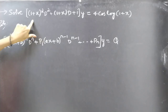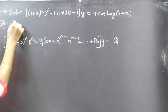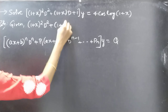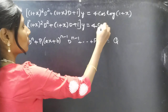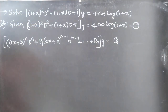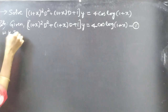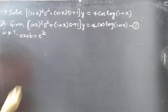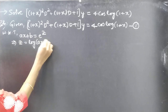We will reduce this Legendre's equation to a linear differential equation with constant coefficients by making a substitution. From the Legendre's equation procedure, we know that (ax+b) is replaced by e^z, then z = log(ax+b).